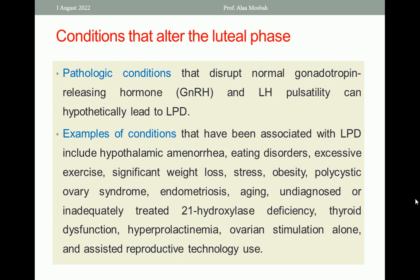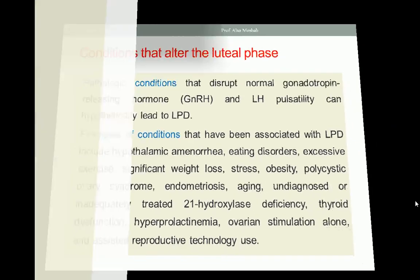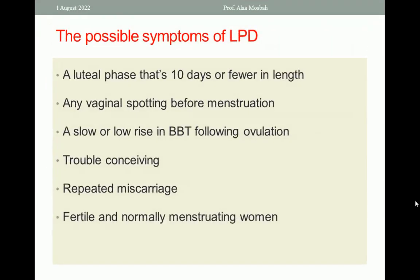Conditions associated with Luteal Phase Deficiency include: hypothalamic amenorrhea, eating disorder, excessive exercise, stress, significant weight loss, PCOS, obesity, aging, endometriosis, undiagnosed or inadequately treated 21-hydroxylase deficiency, thyroid dysfunction, hyperprolactinemia, ovarian stimulation alone, and assisted reproductive technology use. These causes can alter the Luteal Phase and produce Luteal Phase Deficiency.